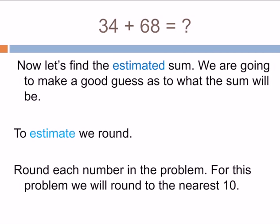We're going to find the estimated sum. We're going to make an estimation. So in order to do that, to estimate, we're going to round each number in the problem and then add them together. For this problem, we're going to round to the nearest 10.